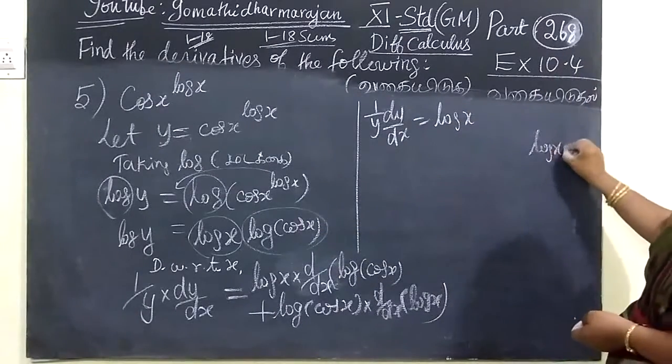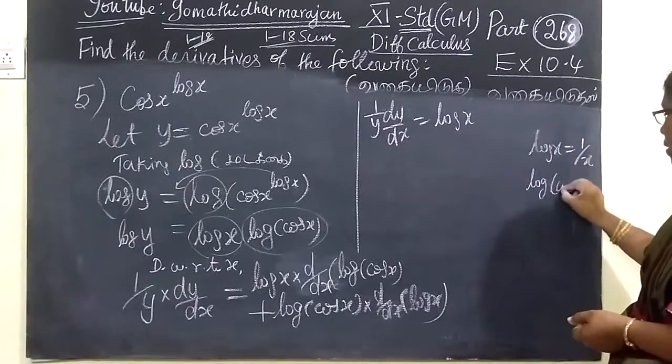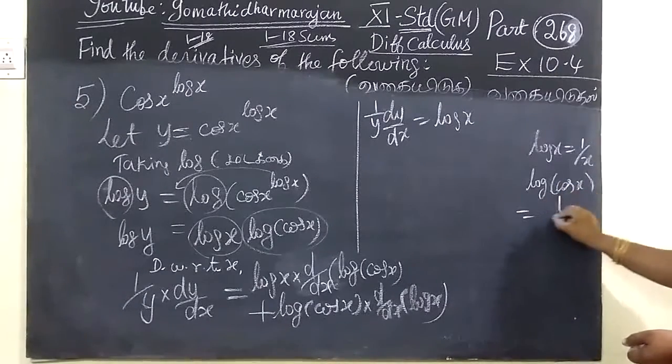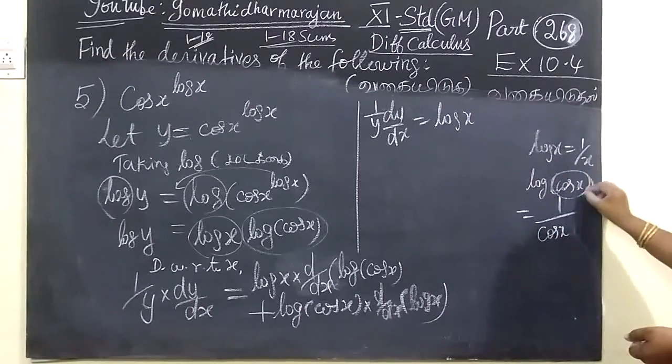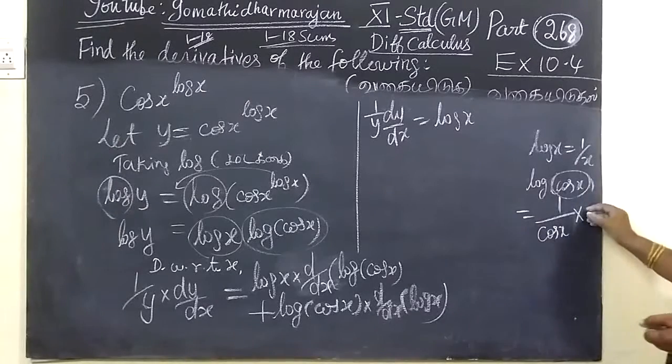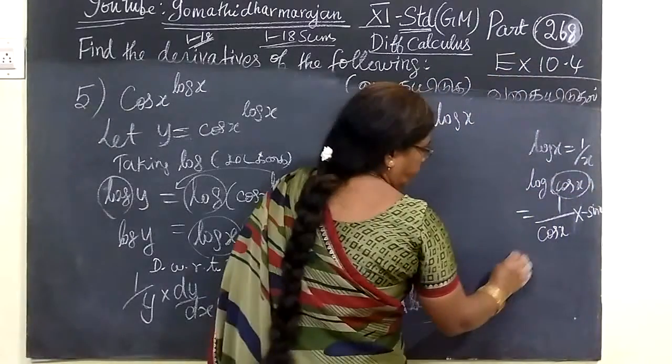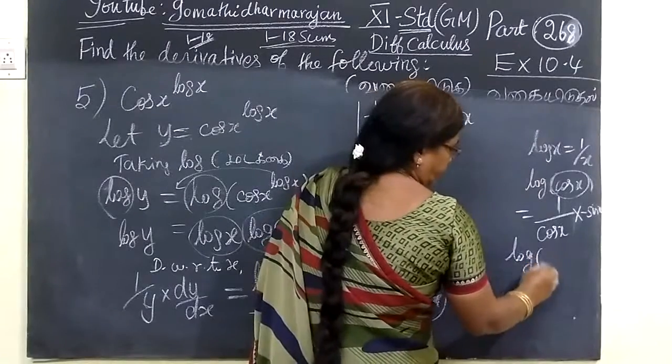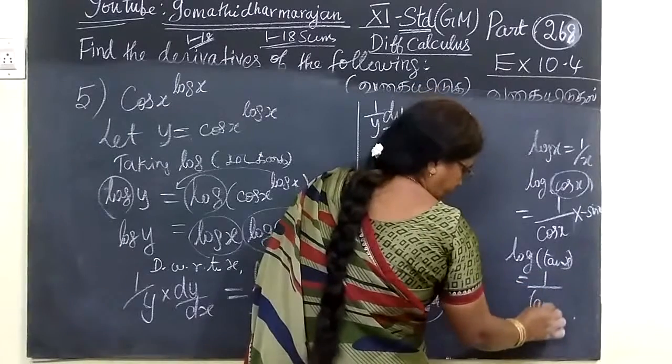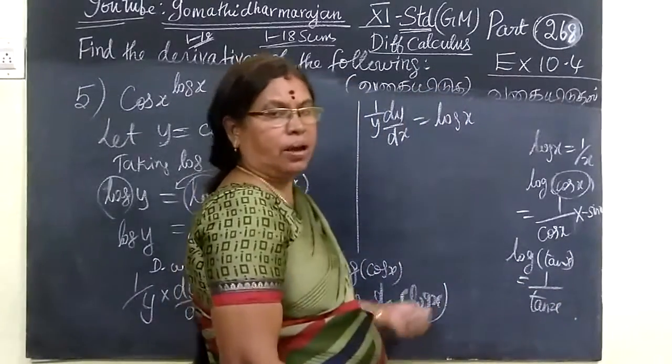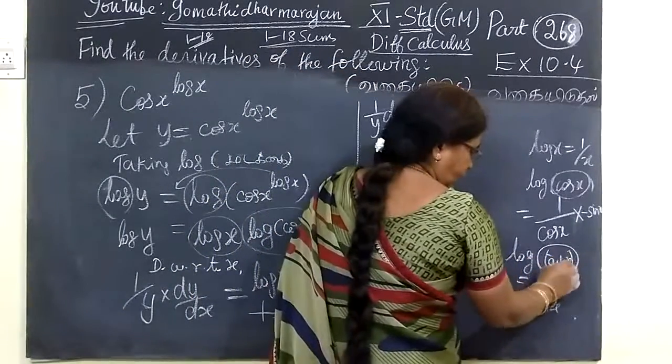The answer is log x times 1 by x. Log x equals 1 by x. One by x times the bracket, the differentiation is minus sin x by cos x.